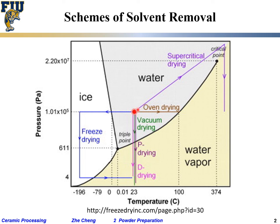For freeze drying on the phase diagram: at one atmosphere you quickly reduce temperature with liquid nitrogen so everything becomes frozen ice. Then you transfer it into a vacuum chamber, going down in pressure, and raise the temperature a little bit. Sublimation happens — from ice solid directly into vapor phase — without passing through the liquid phase.